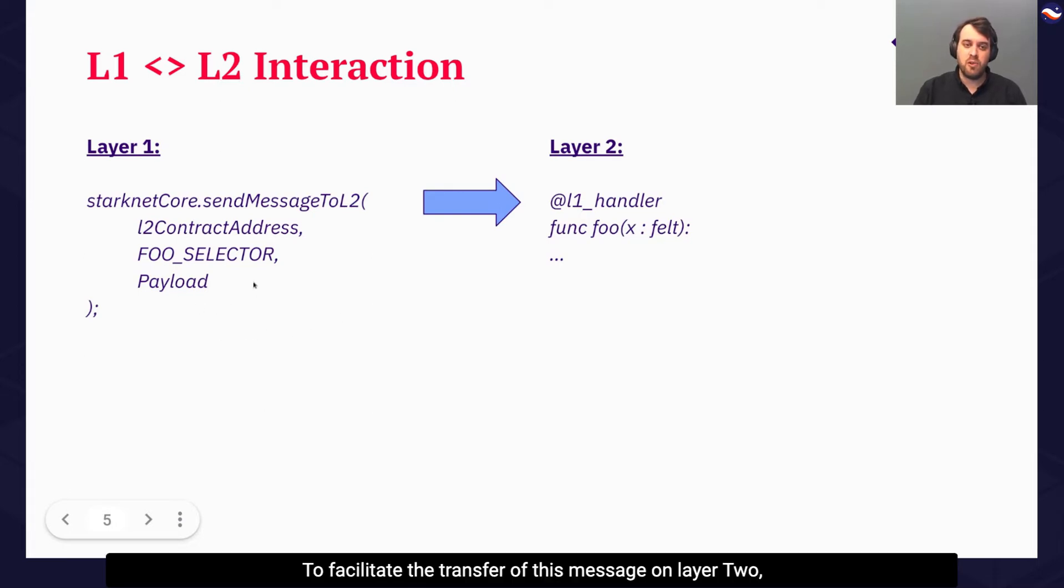To facilitate the transfer of this message, on Layer 2, we provide a function that has the L1 handler directive above it. In this case, Foo is designated as a Layer 1 handler. This is what gives Foo the unique selector indicated by the Foo selector on the left here.